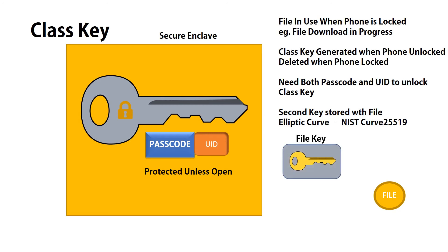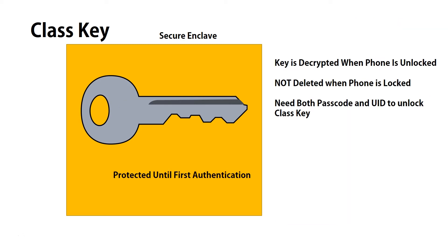For every file that needs to be accessed, a second key — which is created with elliptical curve cryptography — is stored next to the file key in the metadata. That key allows the phone to access the file even when locked.